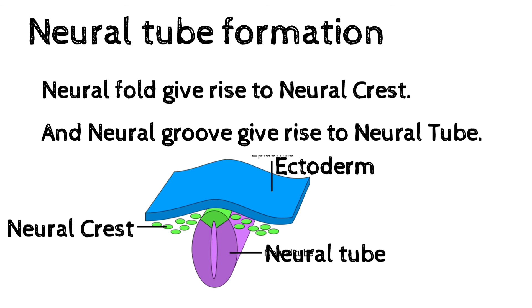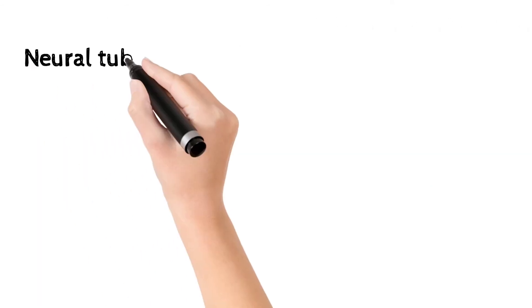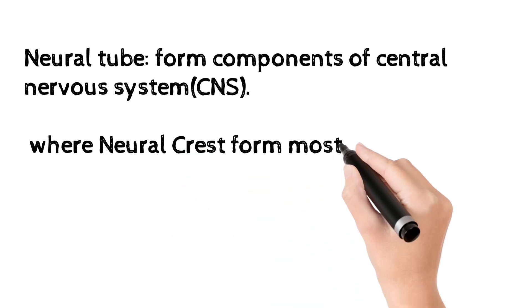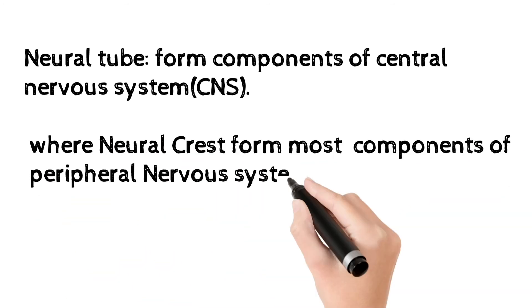Which give rise to most of CNS. Neural tube form components of central nervous system, where neural crest form most components of peripheral nervous system.